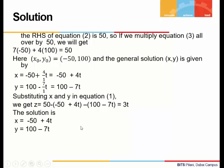So the general solution is x = -50 + 4t, y = 100 - 7t, and z = 3t, where t can take the values 0, ±1, ±2, ±3, and so on.